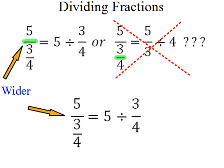If you look carefully, one of the fraction bars is wider than the other. The wider bar separates the numerator from the denominator. Here, the wider bar is between the 5 and the 3. That means the numerator is just 5, and we're going to divide 5 by the denominator, which is 3 fourths. So, it's 5 divided by 3 fourths.